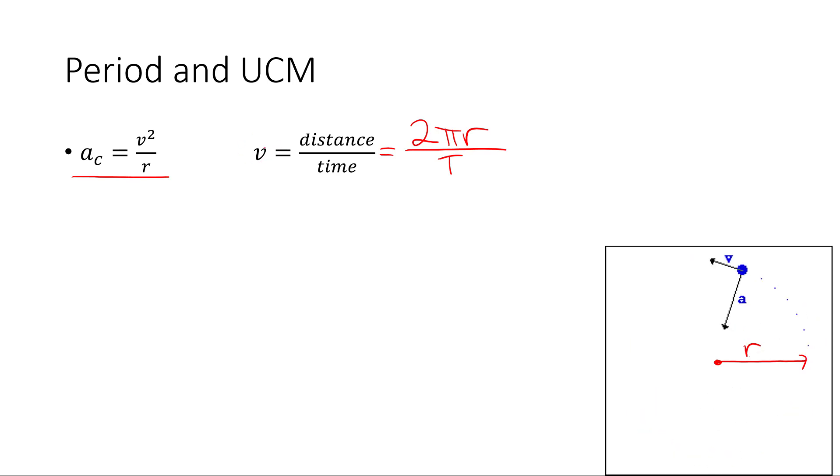So if we want to plug this into our centripetal acceleration equation, we need v squared. v squared is just going to be 2 squared, pi squared, r squared, over big T squared, period squared, or 4 pi squared r squared over big T squared. So let's plug that in. Our centripetal acceleration is then 4 pi squared r squared over period squared, divided by r. r in the numerator, r in the denominator, one of them cancels. We end up with a new formula for centripetal acceleration: 4 pi squared r over period squared.